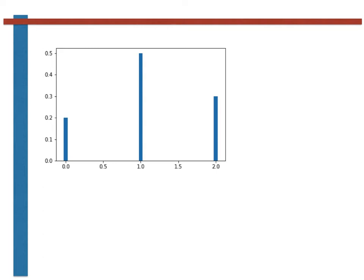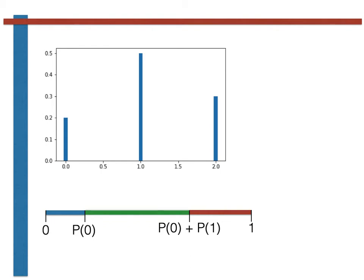If we know the probability mass function for the random variable, we can generate a random variable from the distribution using the algorithm I will discuss here. When explaining this algorithm, I like to imagine that we take the bars of the probability mass function and lie them side by side to generate a line segment with a total length of one. Drawing each bar in a different color, you can see the blue part starts at zero and ends at the probability of getting a zero, the green part starts there and ends at p0 plus p1, and the red part ends at one.